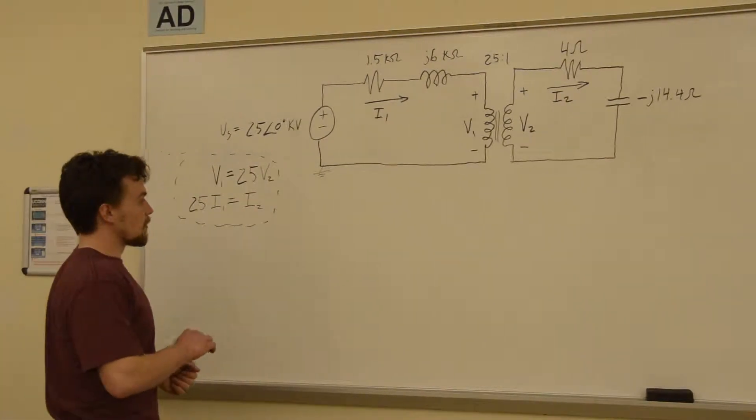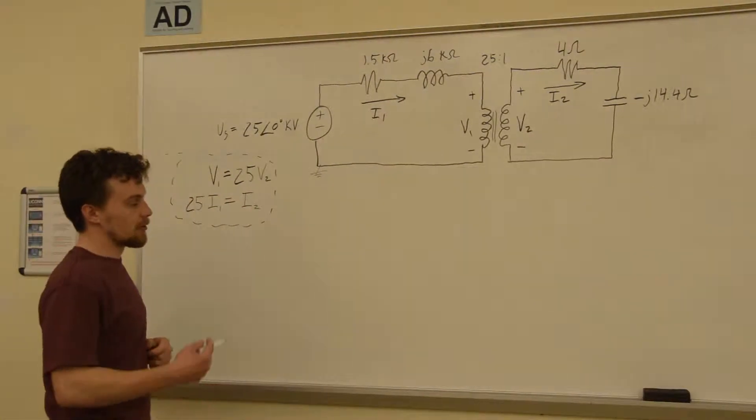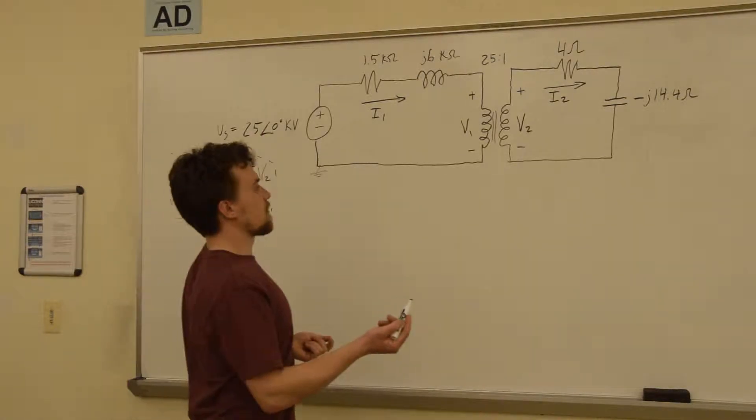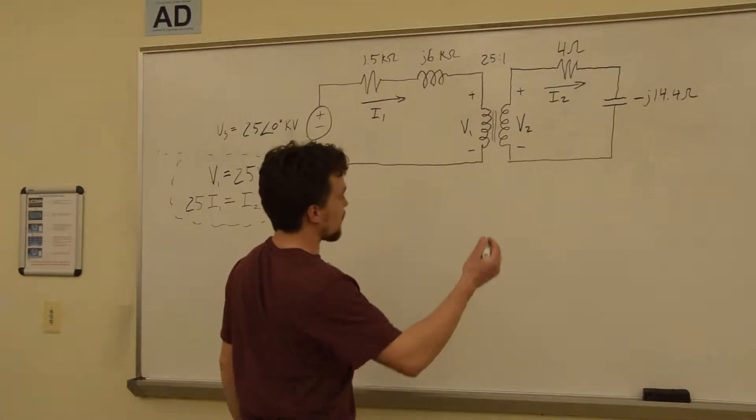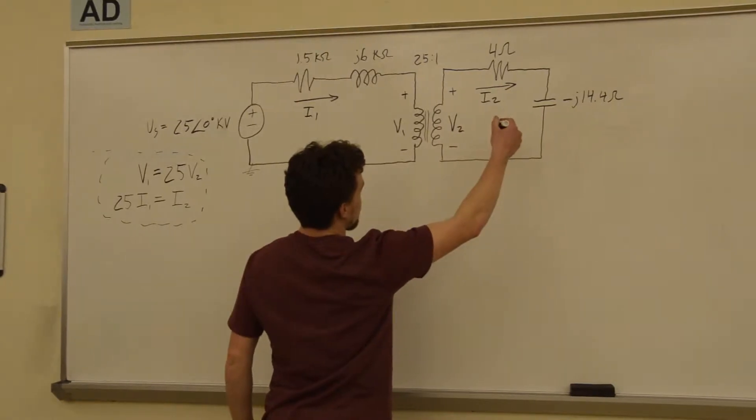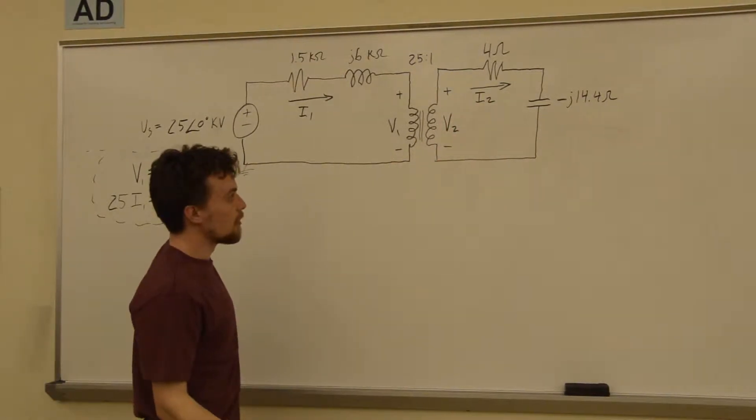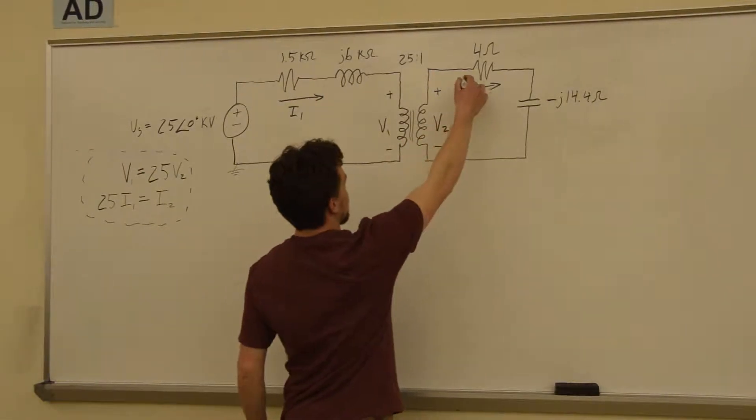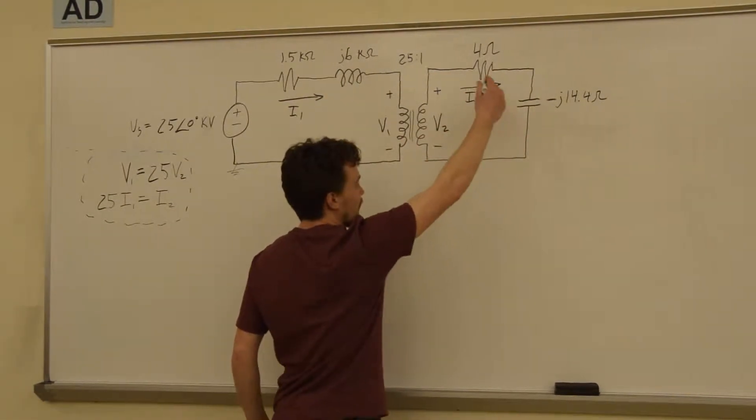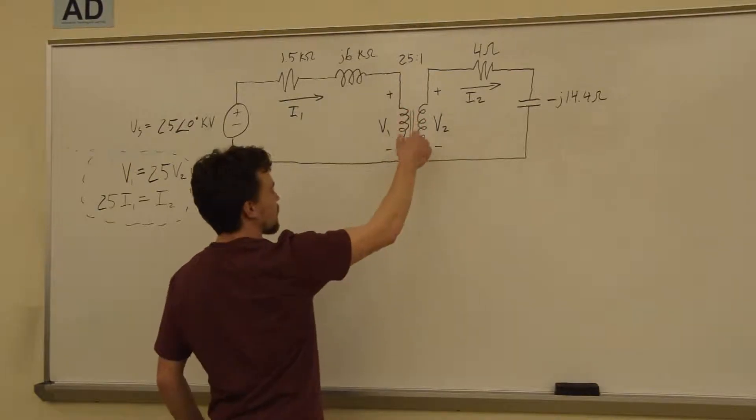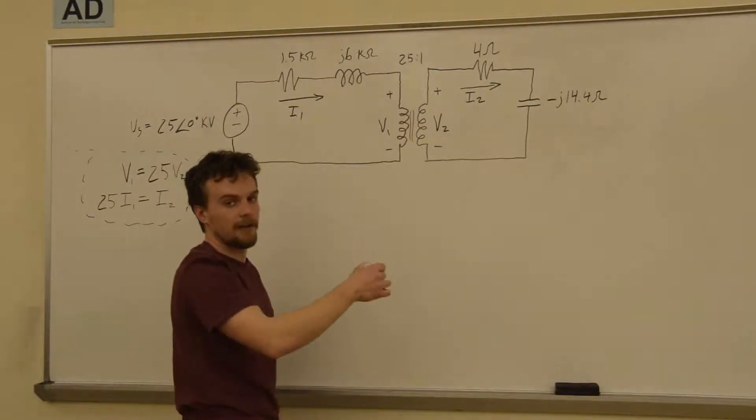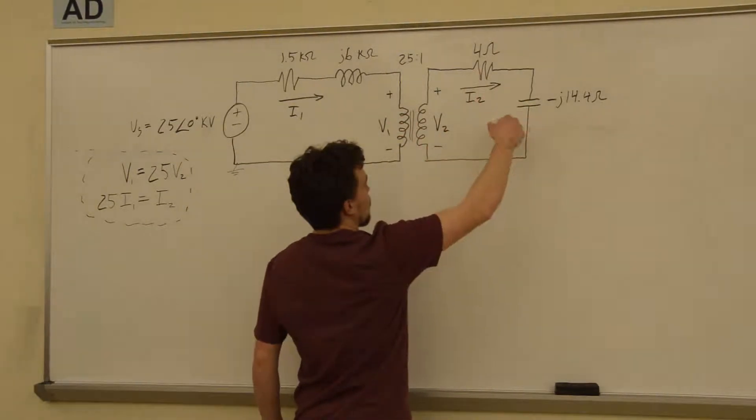So we will just start using KCL or KVL to get some equations. So let's do KCL around this and we can get V2 in terms of I2. We can see that if you go around this loop, the only current in this loop is I2, there's no current flowing in between these at all.